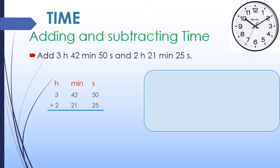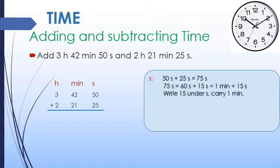We will start from the smallest unit, which is seconds. 50 seconds plus 25 seconds equals 75 seconds. But 75 seconds equals 60 seconds plus 15 seconds. When we divide 75 by 60, we get 1 minute 15 seconds. So we have regrouped 75 seconds to 1 minute plus 15 seconds. We write 15 seconds under the second column and carry 1 minute to the minute column. The answer in the second column is 15.